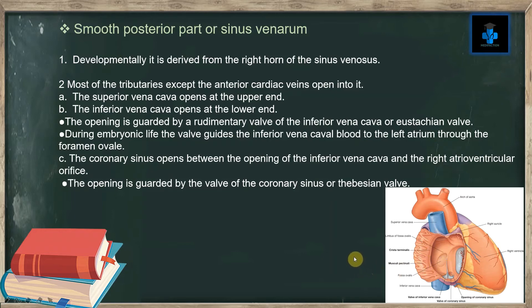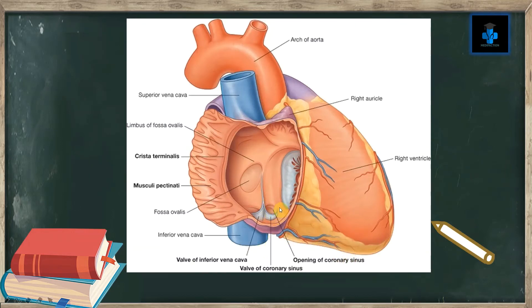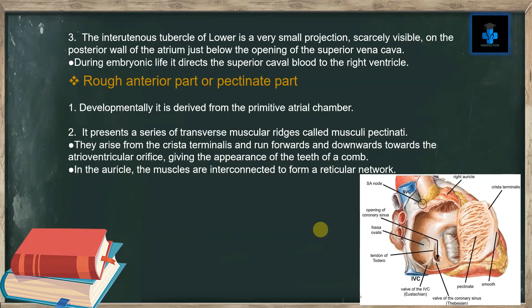The coronary sinus opens between the opening of the inferior vena cava and the right atrioventricular orifice. This opening is guarded by the valve of the coronary sinus, or the Thebesian valve. The intervenous tubercle of Lower is a small projection, scarcely visible, on the posterior wall of the atrium just below the opening of the superior vena cava. During embryonic life it directs the superior caval blood to the right ventricle.